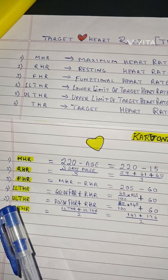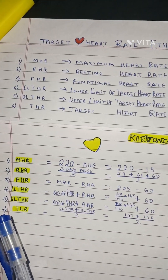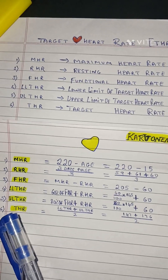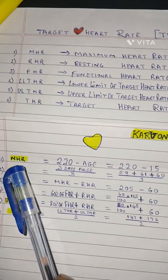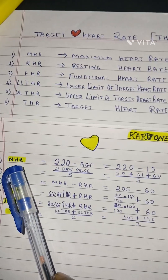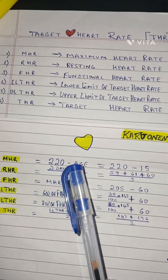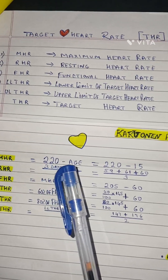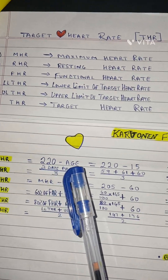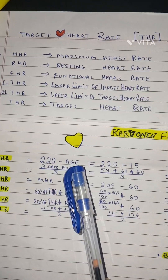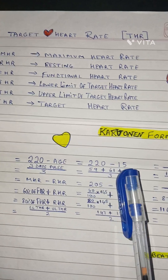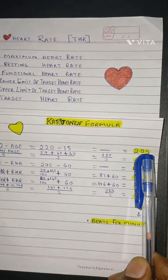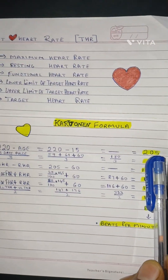And here are the 6 steps on how we find the Target Heart Rate. First, take MHR - the Maximum Heart Rate. The formula is 220 minus the age of the student. That is 220 minus 15, which gives us 205.